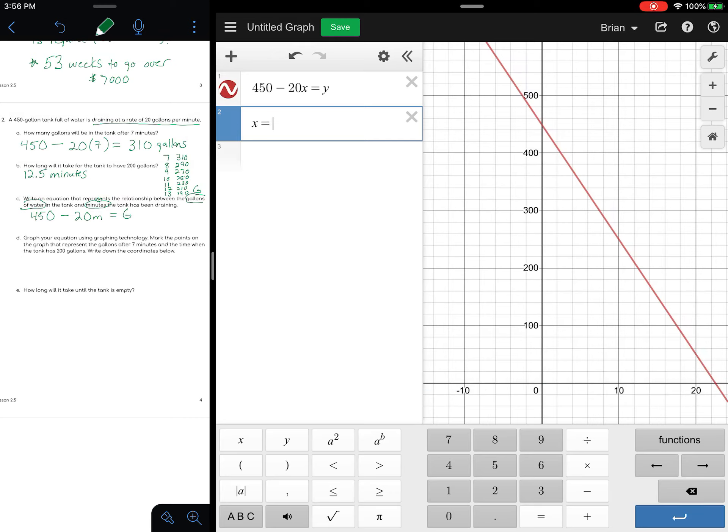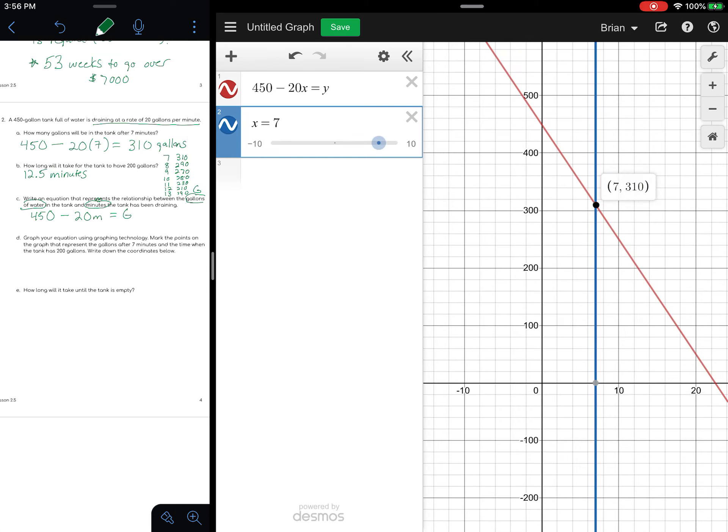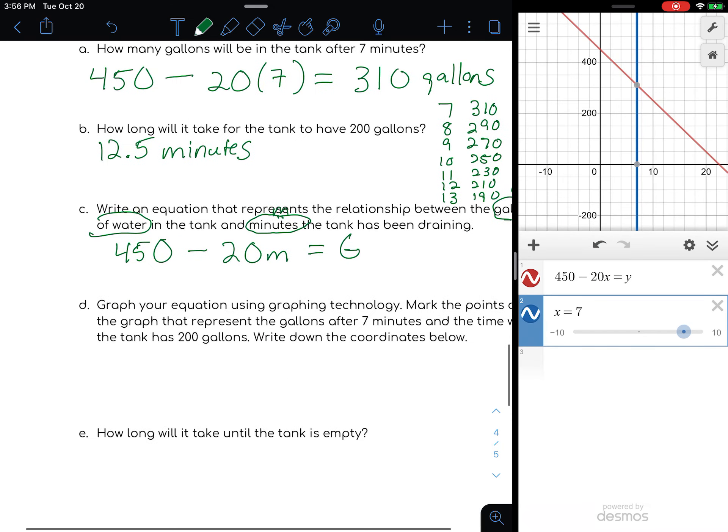One thing I can do is drag a point and say at 7 minutes, my X value is 7, trying to figure out when I get to exactly—there it is, 310. But it disappears on me, so maybe what I want to do is at 7 minutes, if I do an X equation, X equals 7, now I can see exactly where they cross.